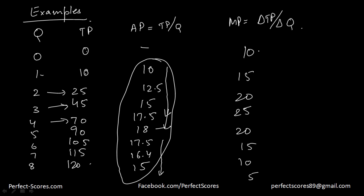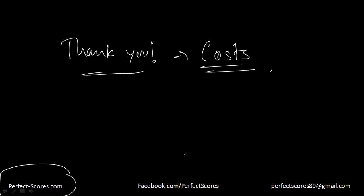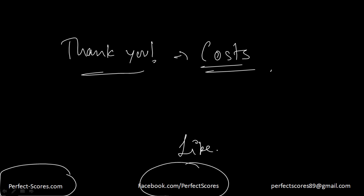You can calculate that for yourself. We can clearly see that as the quantity of labor employed increases, the marginal product reaches its maximum value and after that it eventually diminishes. So that would be about this video, guys. Thank you very much for watching. In the next video we're going to be talking about the costs involved. Make sure you explore perfect-scores.com, give us your like on Facebook, follow us on Twitter, and if there's any feedback you can always give it to us here. Thank you very much for watching. I'll see you in the next one.